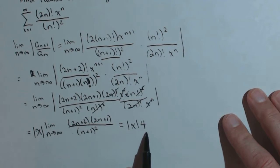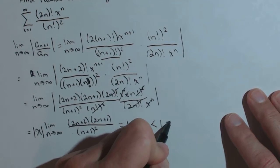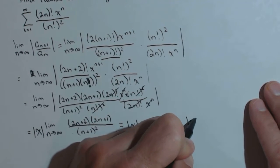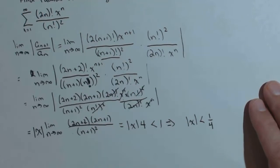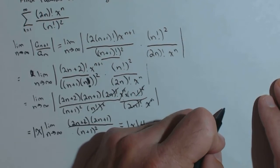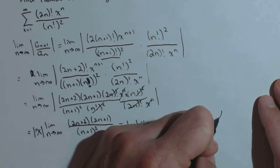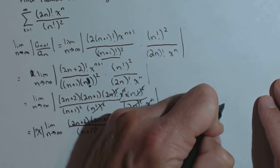Now, what we want is for this to be less than 1 in order for this to converge. So in solving this, what we get is that the absolute value of x has to be less than 1 fourth. So what we've got in this 1 fourth is our radius of convergence.